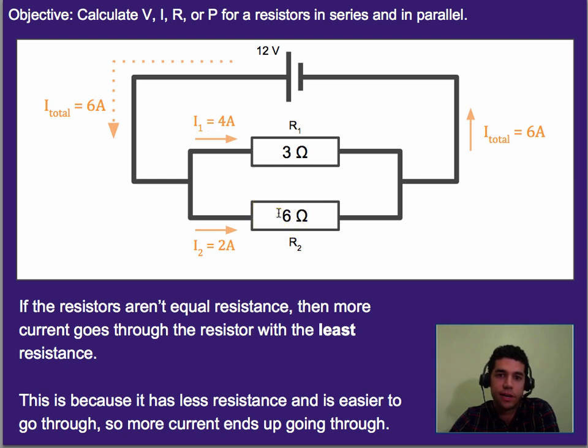So in this case, since this guy is twice as much resistance as this one, this one will get half as much current. You can actually follow Ohm's law using that. This one will get twice as much current because it is half as big of a resistance.